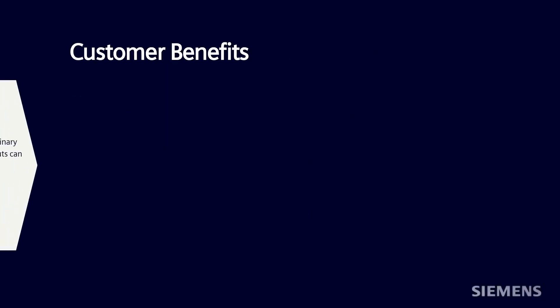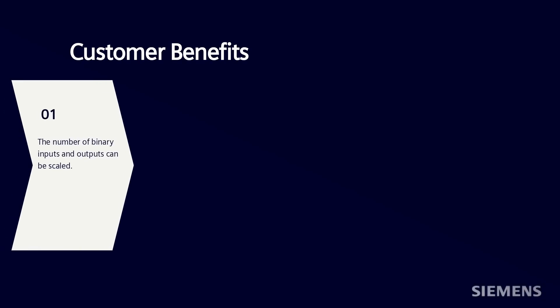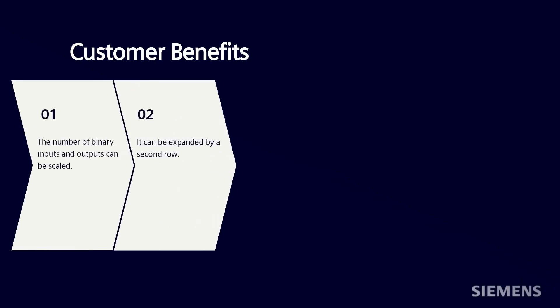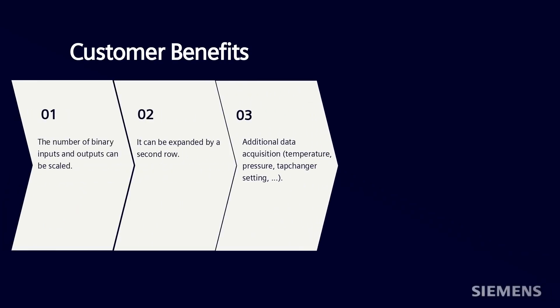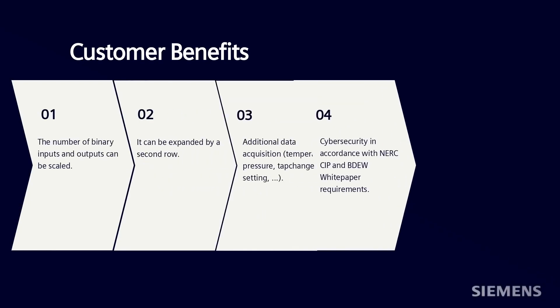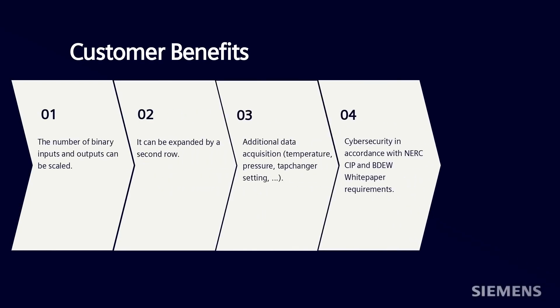The 6MD84 is a high-performance IO Box specifically designed for the high demands in measurement and control. The extended data acquisition provides additional interfaces for more binary inputs, outputs, and additional data like temperature, pressure, tap change, or setting. It has also been designed for maximum cybersecurity in accordance with the requirements of NERC CIP and BDEW whitepaper.